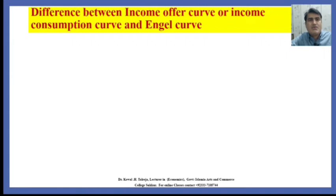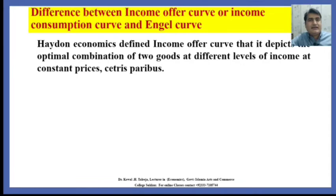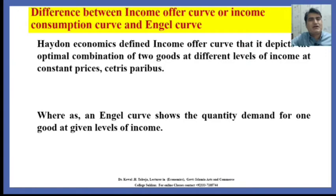What is the difference between the Income Offer Curve or Income Consumption Curve and the Engel Curve? The Income Offer Curve depicts the optimal combination of two goods at different levels of income at constant prices, ceteris paribus. When we talk about the Income Consumption Curve, we are concerned with two goods. When we talk about an Engel Curve, we are only concerned with one good. An Engel Curve shows the quantity demanded for one good at a given level of income, whereas the Income Consumption Curve shows the optimal combination of commodities or preferences of the consumer for both goods. An Engel Curve is drawn from the Income Consumption Curve and shows the preference for one commodity at different levels of income.